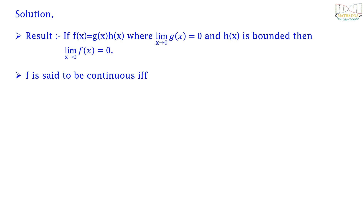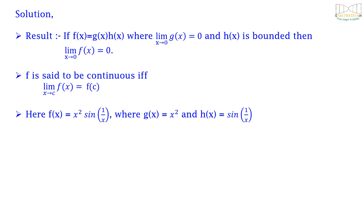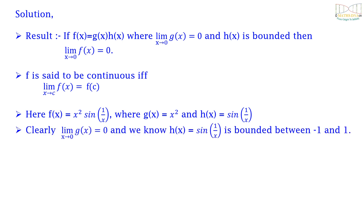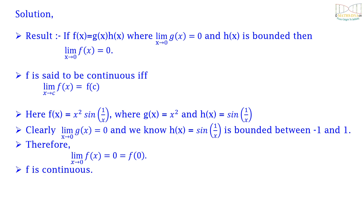We know f is continuous if and only if the limit as x tends to c of f(x) equals f(c). Here f(x) = x² · sin(1/x) for x ≠ 0, where g(x) = x² and h(x) = sin(1/x). Clearly the limit of g(x) as x → 0 is 0, and sin(1/x) is bounded between -1 and 1 since sine is a bounded function. Therefore, the limit of f(x) as x → 0 equals 0, which equals f(0). So f is continuous.